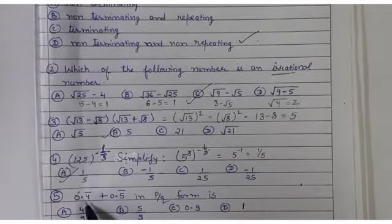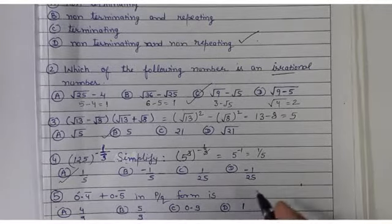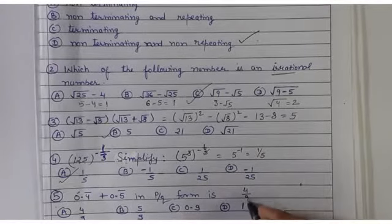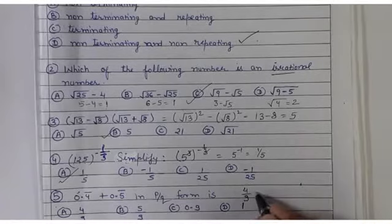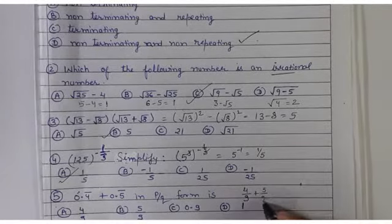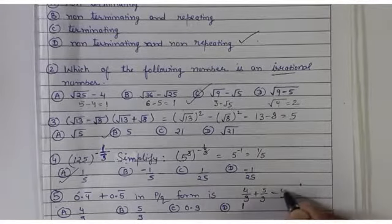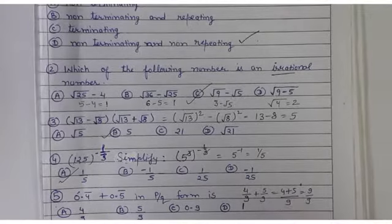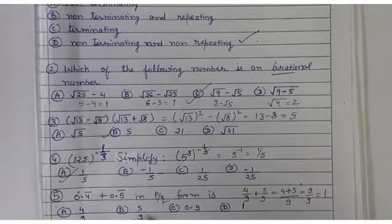Question number 5: 0.4̄ + 0.5̄ in p/q form. 0.4̄ equals 4/9 and 0.5̄ equals 5/9. Taking LCM as 9: (4 + 5)/9 = 9/9 = 1. Looking at the options, the answer is B.